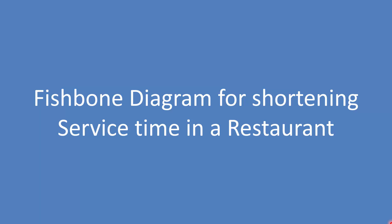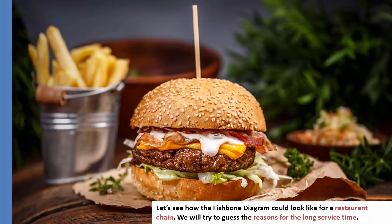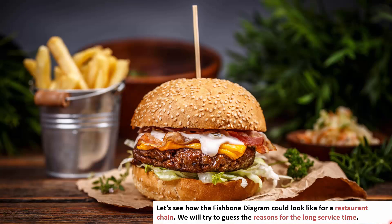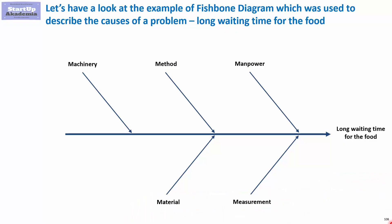Let's see an example of a fishbone diagram. We'll do that for the restaurant chain and we will try to find the reasons for the long service time. We will use the 5M framework. Here we've got the long waiting time for the food, and we start with the machinery.